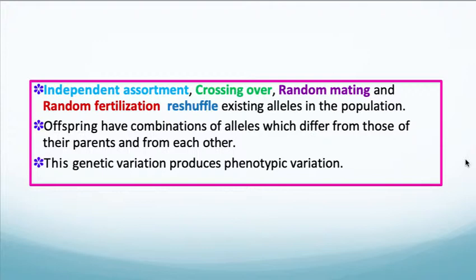Independent assortment, crossing over, random mating, and random fertilization reshuffle existing alleles in the population. Offspring will have combinations of alleles which differ from those of their parents and from each other, meaning that even siblings won't look the same or be the same. And this genetic variation produces phenotypic variation.